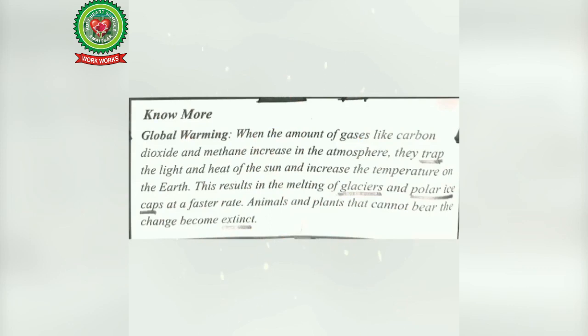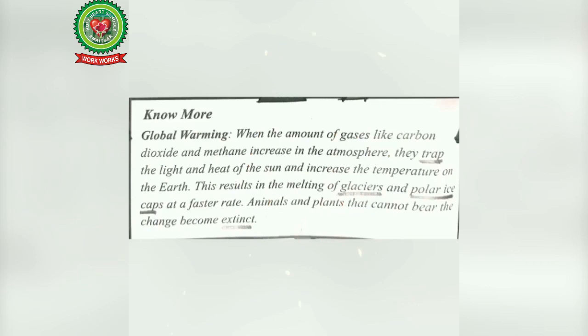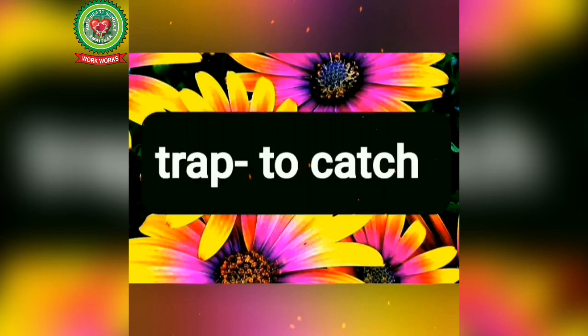Now concentrate on the paragraph given in the box — global warming. When the amount of gases like carbon dioxide and methane increase in the atmosphere, they trap the light and heat of the sun and increase the temperature on the earth. This results in the melting of glaciers and polar ice caps at a faster rate. Animals and plants that cannot bear the change become extinct. Underline the word trap — means to catch.